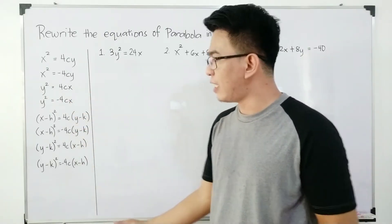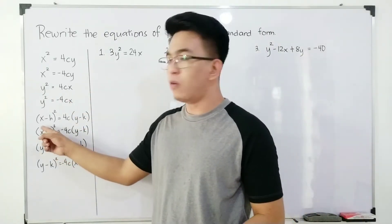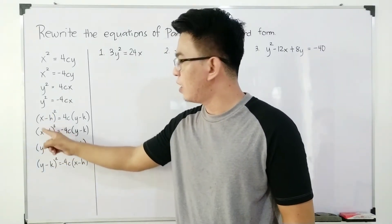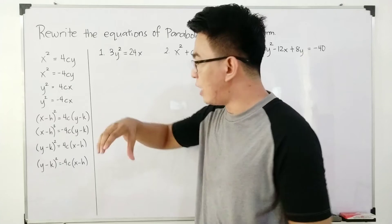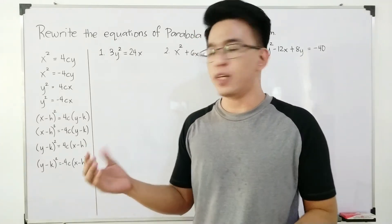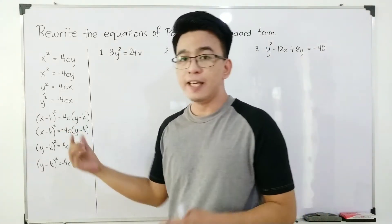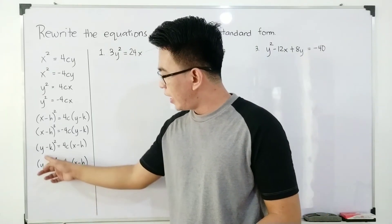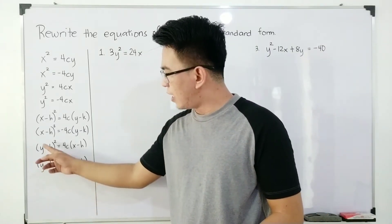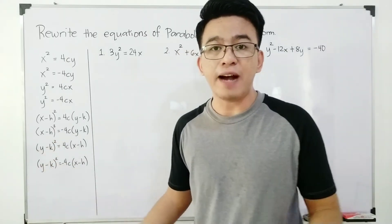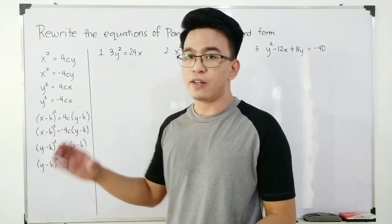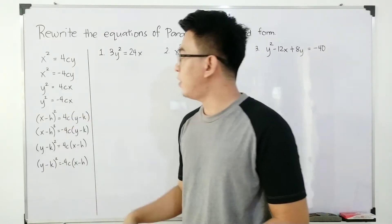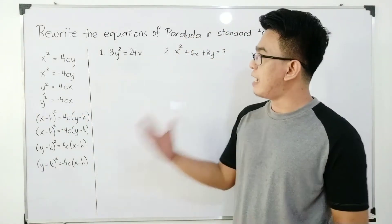That's the pattern here. Whenever the variable x has an exponent of 2, it's either upward or downward. You'll know it's upward if the value of your 4c is positive. And if you have the power of 2 or exponent of 2 in the variable y, automatically it's either the opening of the parabola is right or left.